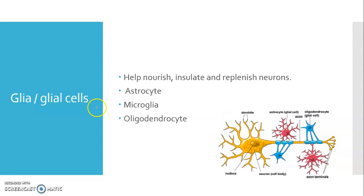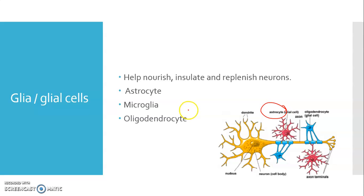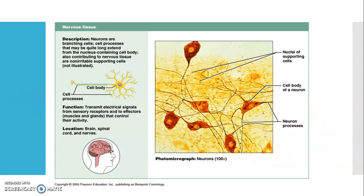Neuroglial cells, or glial cells, mainly help to nourish, insulate, and replenish the neurons. There are three types: astrocytes, microglial cells, and oligodendrocytes. These are all types under the glial cells.